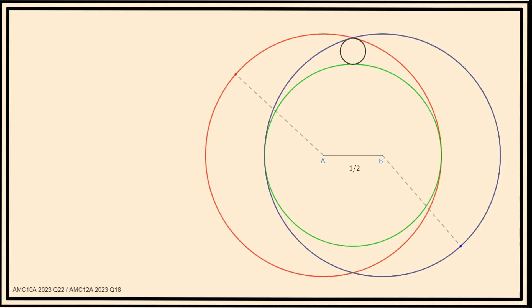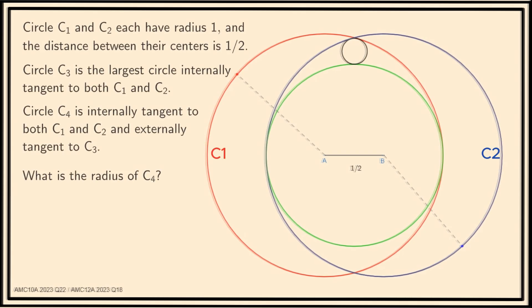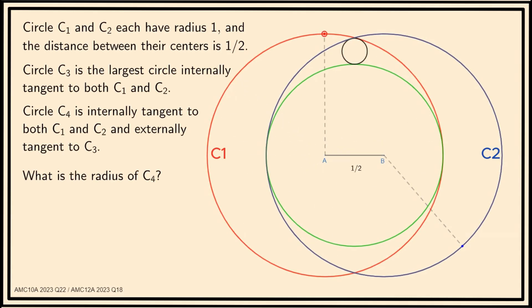Here's the problem statement. Circle C1 and C2 each have radius 1, and the distance between their centers is 1/2. Circle C3 is the largest circle internally tangent to both C1 and C2. Circle C4 is internally tangent to both C1 and C2 and externally tangent to C3. What is the radius of C4?